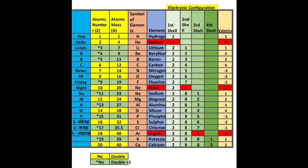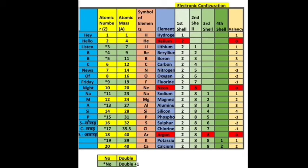Electronic configuration is the arrangement of electrons in their respective shells. Hydrogen has atomic number 1, so it is accommodated in shell 1. Helium with atomic number 2 is also in the first shell, as the first shell can hold a maximum of 2 electrons. Lithium has 3 electrons, so its configuration is 2,1 — two in the first shell and one in the second.